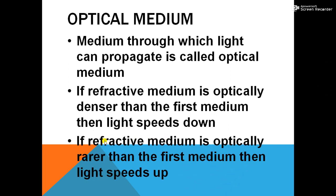If the refractive medium is optically rarer than the first medium, then light speeds up. Consider a pair of media: glass and air. Light travels from glass to air. Here the refractive medium, air, is optically rarer, so light speeds up — light increases its speed. These two points are very important: in denser medium light speeds down, in rarer medium light speeds up.